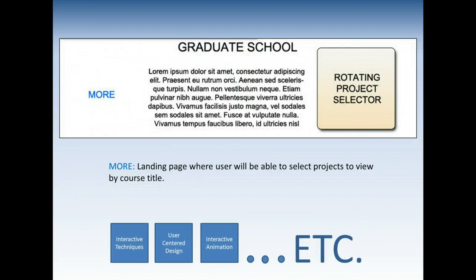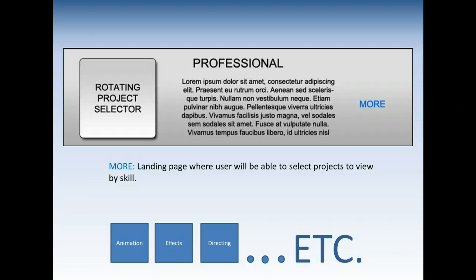Below that is the graduate school section. There's a rotating project selector with possibly three different projects — it'll have a thumbnail, and if you're interested you click it. If you go to the full graduate school section, it takes you to a different page where, by class or by course, it gives you a list of projects you can view. The same idea applies to my professional section — things I've done in After Effects, Photoshop, and if somebody's interested in listening to me direct a newscast, that would be there too.